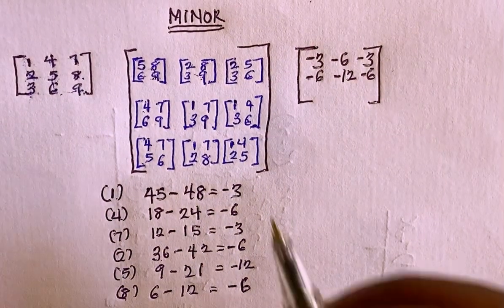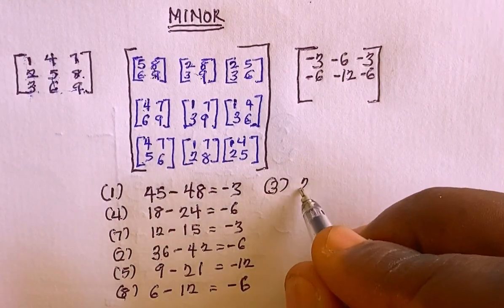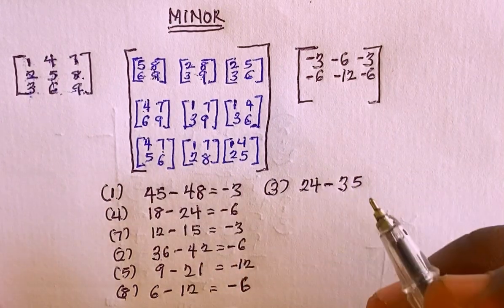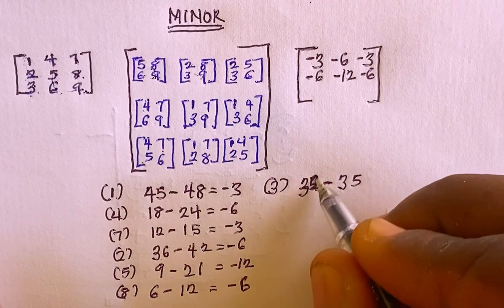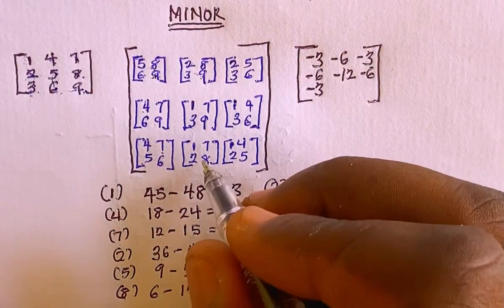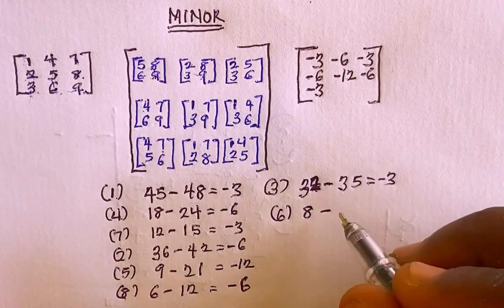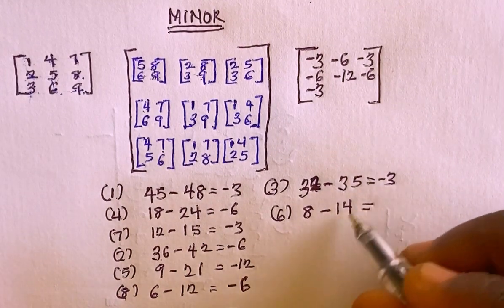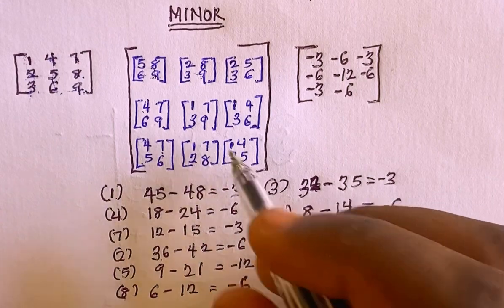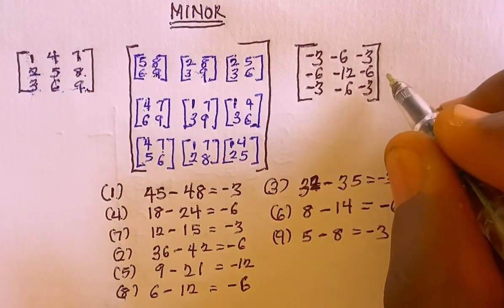For element 3, the sub-matrix is 4, 5, 7, 6, so 6 multiply by 4 is 24, minus 5 multiply by 7 is 35, giving minus 11. For element 6, the sub-matrix is 1, 2, 7, 8, so 8 multiply by 1 is 8, minus 2 multiply by 7 is 14, giving minus 6. For element 9, the sub-matrix is 1, 2, 4, 5, so 5 multiply by 1 is 5, minus 2 multiply by 4 is 8, giving minus 3.